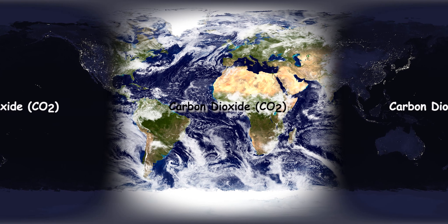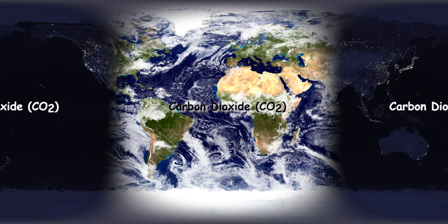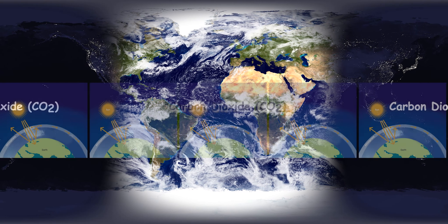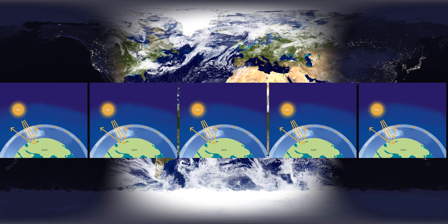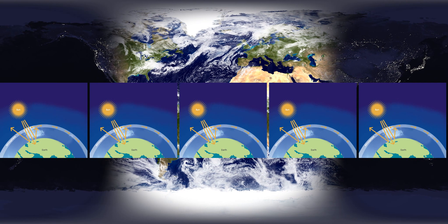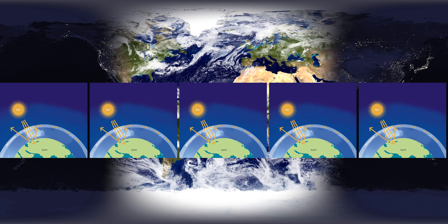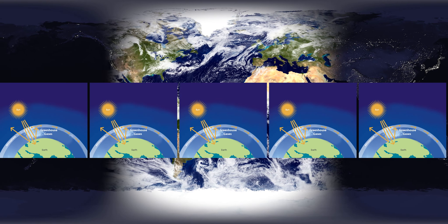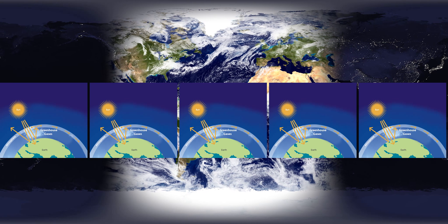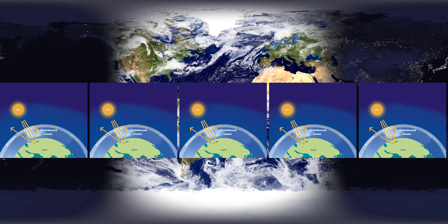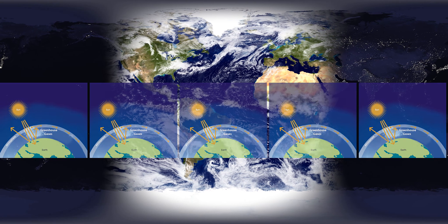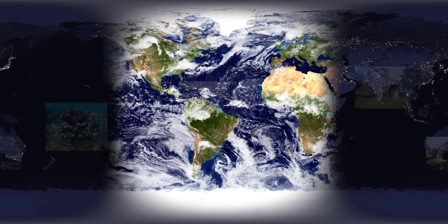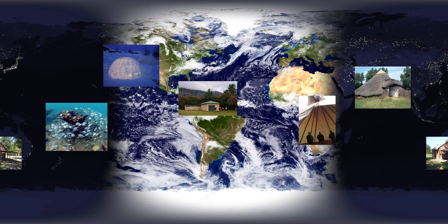Carbon dioxide, or CO2, acts like insulation in the atmosphere, trapping heat leaving the Earth's surface. Because of that, CO2 is called a greenhouse gas, and along with the other greenhouse gases, it keeps our planet from getting too cold, contributing to making the Earth habitable.